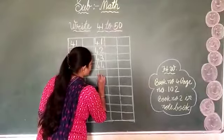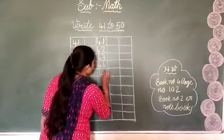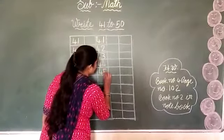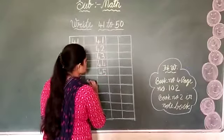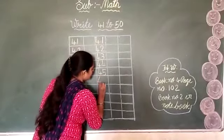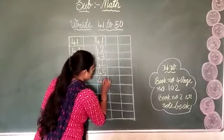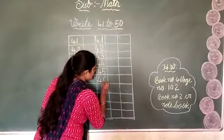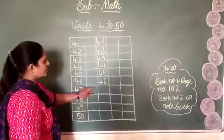Next is 4, 5, 45. Write it in the next box: 4, 5, 45. After that, 4, 6, 46. Write 4, 6, 46.